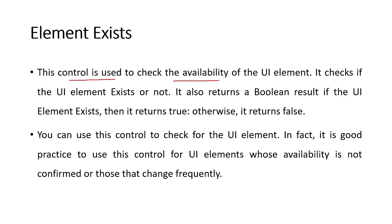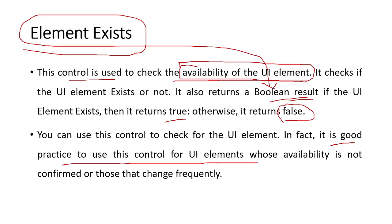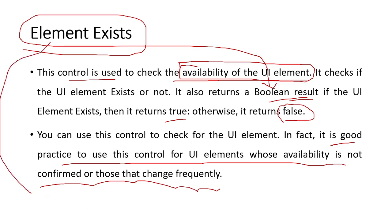According to the author, Element Exist is used to check whether a specific UI element is present or not. If it is present, it will return true; otherwise it will return false. This activity returns a boolean value. It is used to check the availability or presence of any specific UI element. It is a good practice to use this control for UI elements whose availability is not confirmed or those that change frequently.